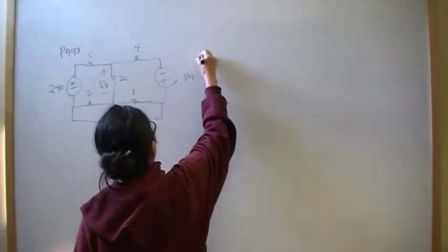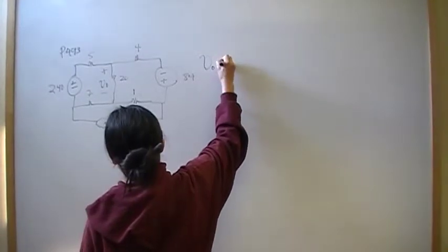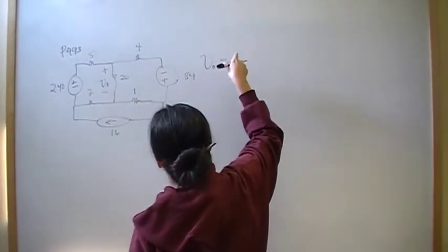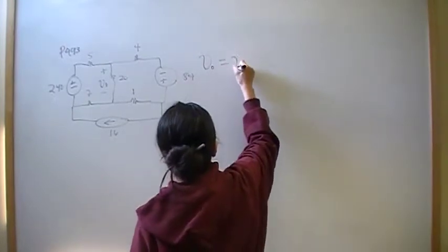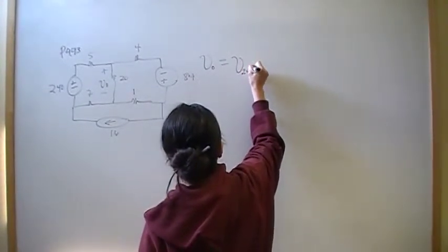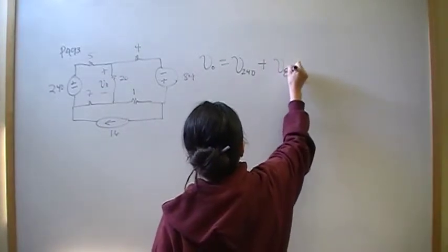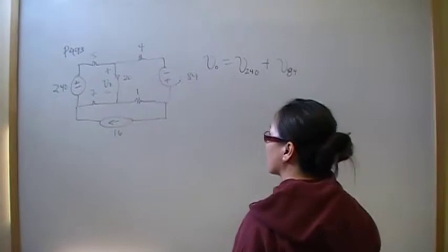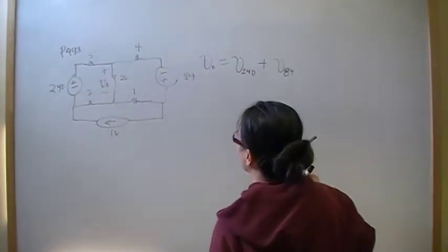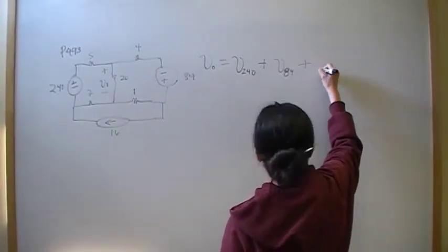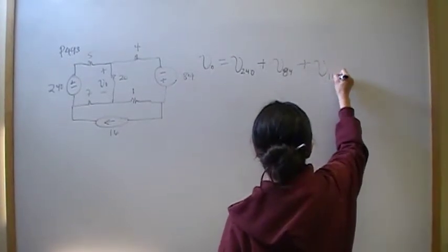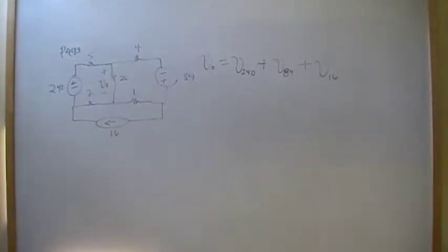So superposition says that V out is going to be the effect, the voltage drop, if we consider only the 240, so V240, plus V84, so the voltage caused by the 84 volt independent voltage source individually, plus the voltage caused by the 16 amp. So that is what superposition says.